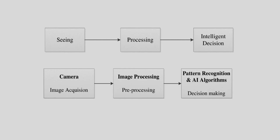I want to show the similarity between the human visual system and the computer vision system. In the human visual system we have eyes to see objects, images or videos. After this we do some processing in our brain and take intelligent decisions. In the computer vision system we have cameras — single or multiple — for image and video acquisition. After this we do system processing, that is pre-processing and image processing, and then apply pattern recognition and artificial intelligence algorithms for decision making. In both cases, the light photon is converted into an electrical signal.